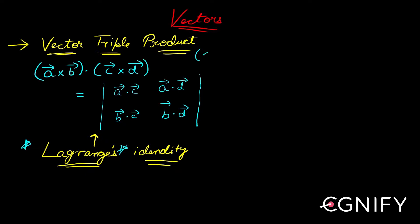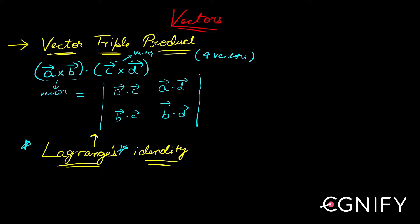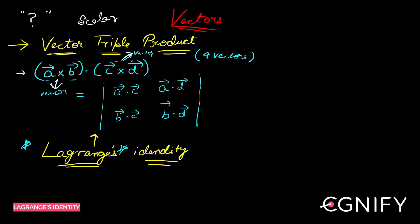This identity involves four vectors a, b, c, d. You take the cross product of two, getting a vector, then the cross product of the other two, getting another vector, and then you take the dot product of both results. Can you tell whether the end result is a vector or a scalar? The answer is it's a scalar, because ultimately you're taking the dot product of two vectors.